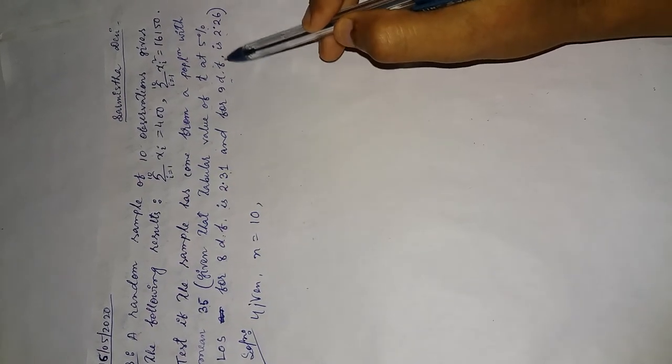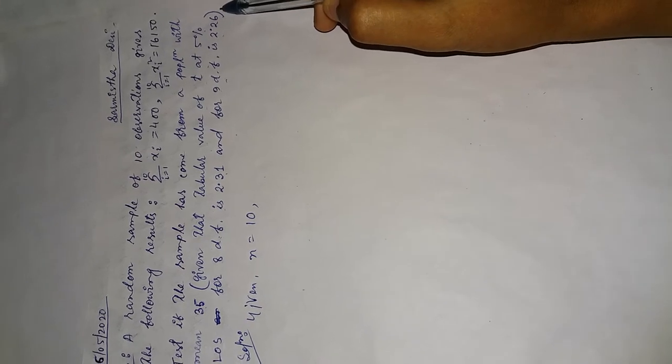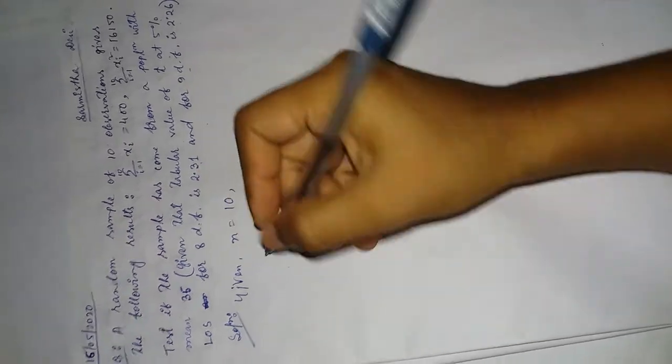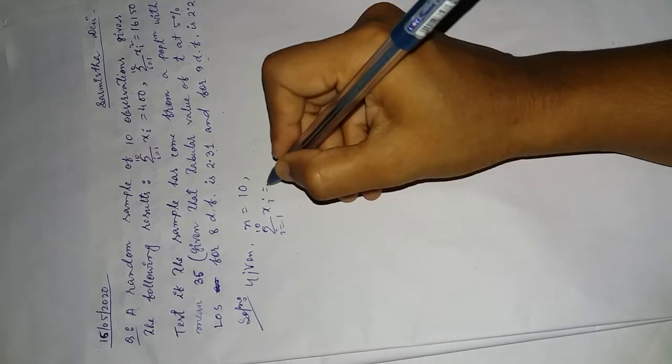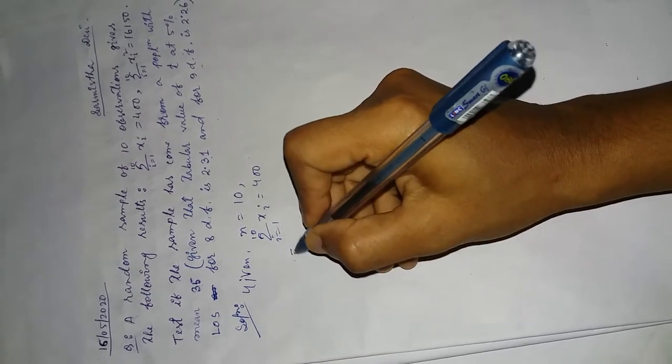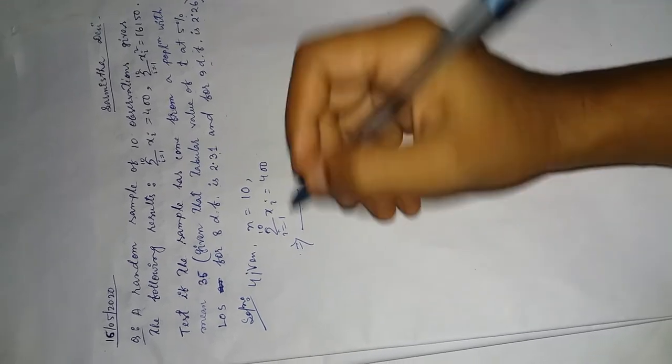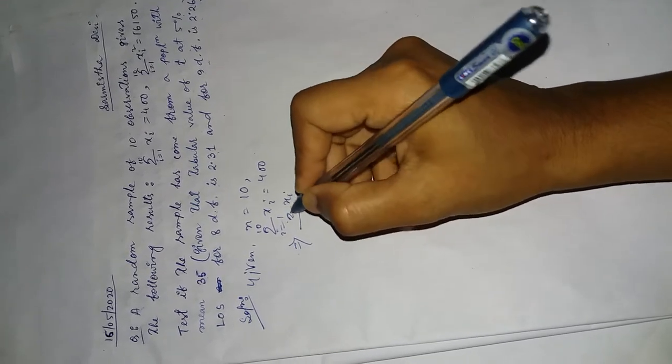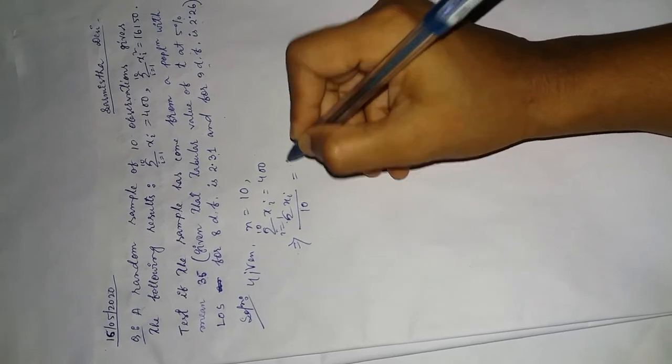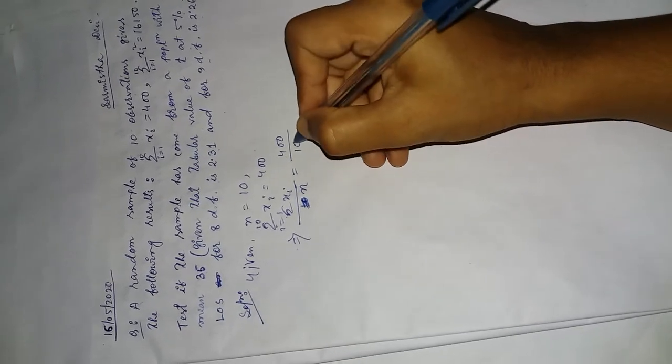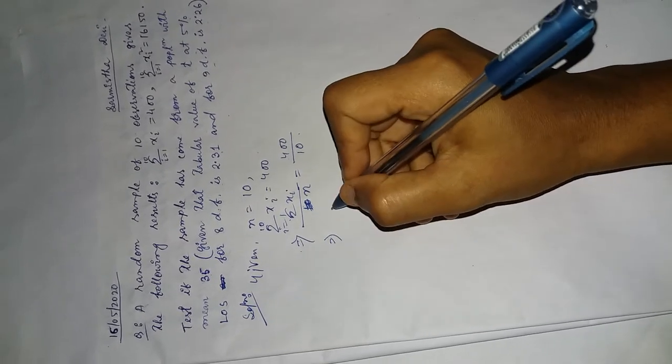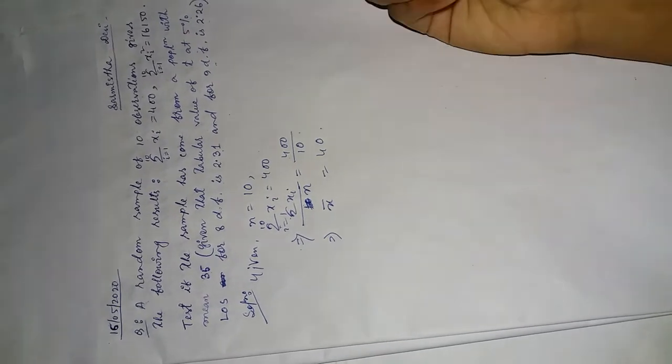9 degrees of freedom or 2.26. Now summation xi is given from 1 to 10, it is 400. So summation xi divided by n, which gives us x bar. That means n is 10, x bar is given as 40.